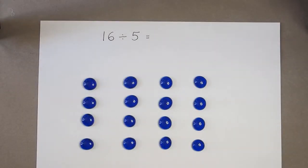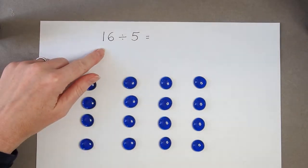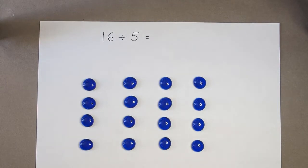Let's look at how we can express a remainder as a fraction when we're working out calculations for division. So I've got the calculation 16 divided by 5 and I have 16 counters.